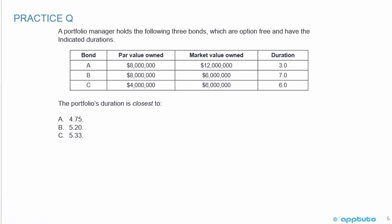Another quick practice question. A portfolio manager holds the following three option-free bonds. Bond A: par value 8 million, market value 12 million, duration 3. Bond B: par value 8 million, market value 6 million, duration 7. Bond C: par value 4 million, market value 6 million, duration 6. The portfolio's duration is closest to A) 4.75, B) 5.2, or C) 5.33.